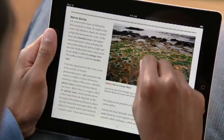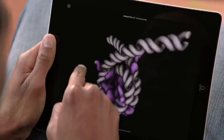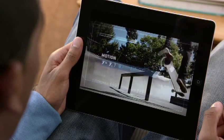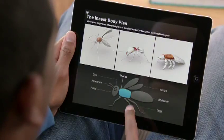When you integrate photography, video, audio, interactive objects, and keynote animations right into the page, the material becomes so much more immersive and compelling. And you can do things you just can't do with a static paper textbook.